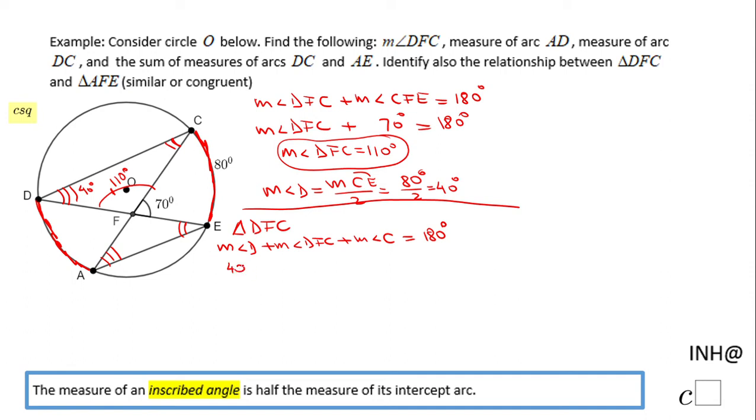Angle D is 40 degrees, DFC is 110, plus the measure of angle C equals 180. So we have 150 plus the measure of angle C equals 180. That means the measure of angle C is 30 degrees.